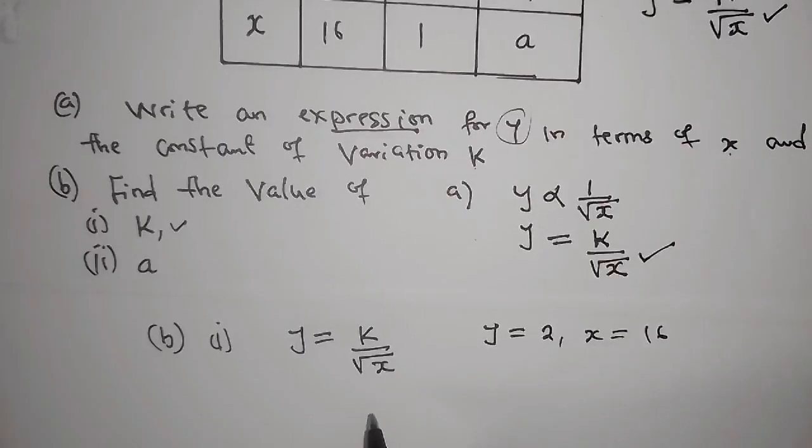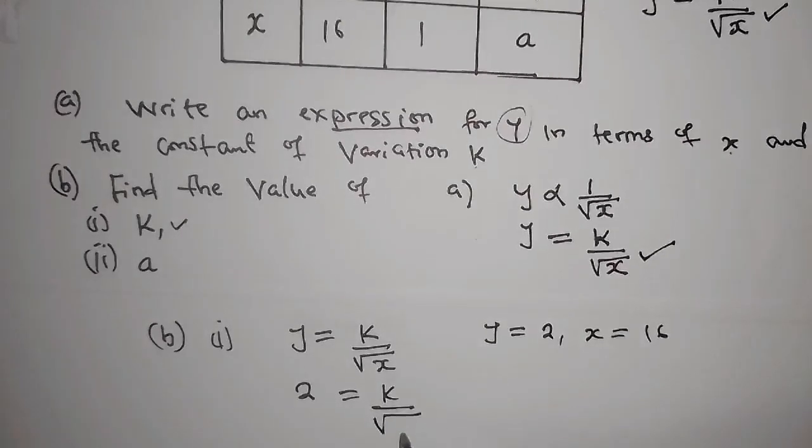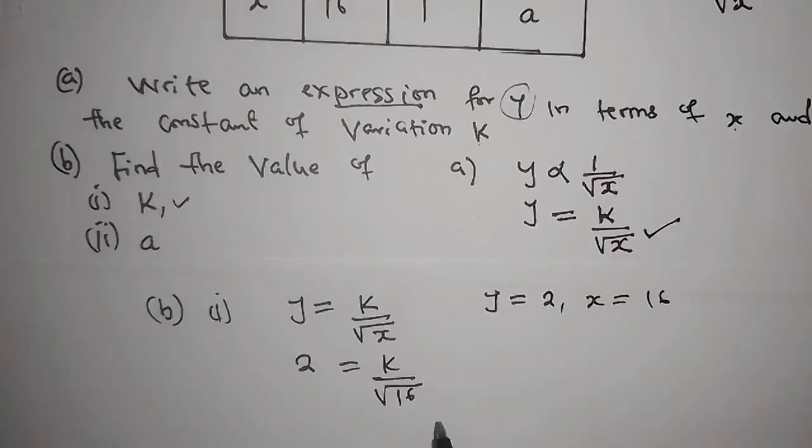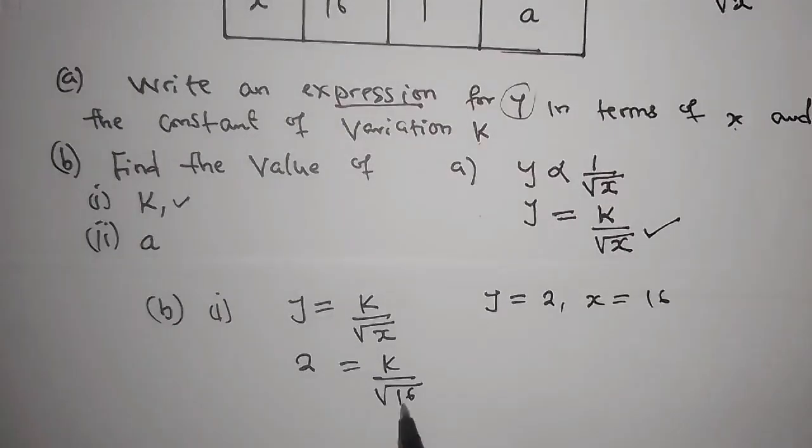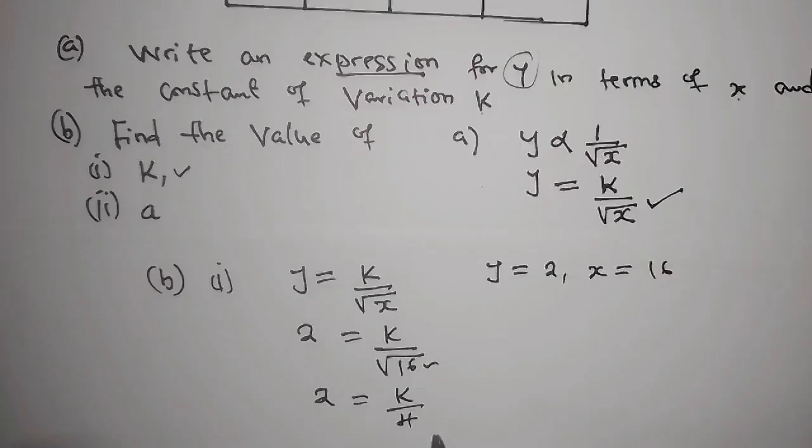So from there now, you substitute the values: y equals 2, so you put 2 equals to k over the square root of 16. So now we are looking for k. But first of all, you can simplify that. This is going to become 2 equals to k over 4.